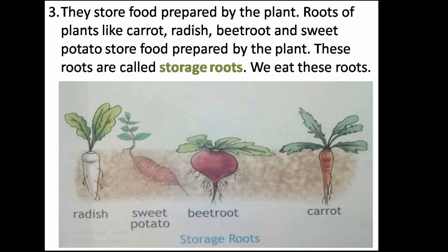Third, roots store food prepared by the plant. Roots of plants like carrot, radish, beetroot, and sweet potato store food prepared by the plant. These roots are called storage roots, and we eat these roots.